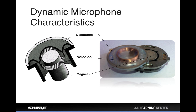Besides the XLR connector and maybe a transformer, that's about all the parts there are to a dynamic microphone — no active electronics, so it doesn't require any power. There's less that can go wrong, which is part of what makes them so rugged, environmentally stable, and relatively low cost, yet still capable of capturing pretty high sound quality.